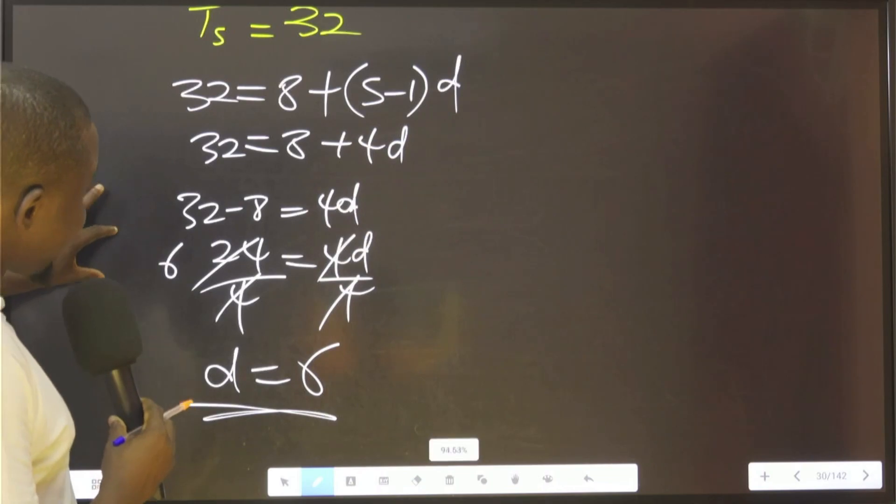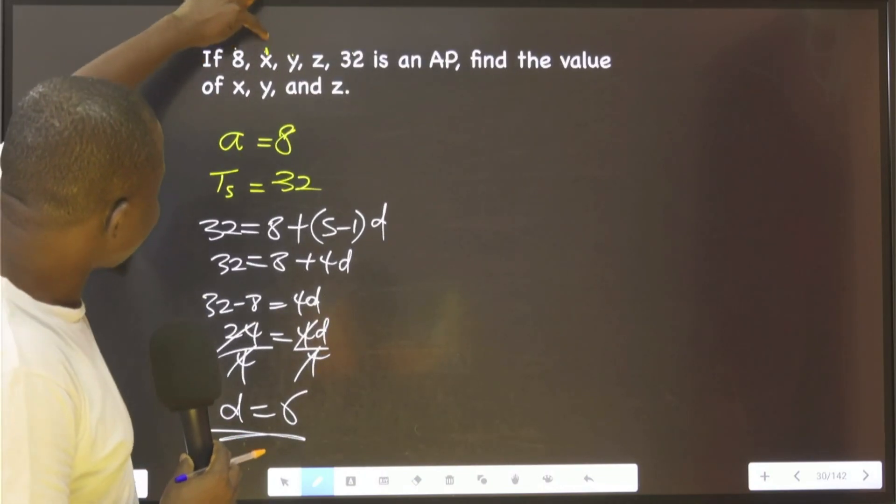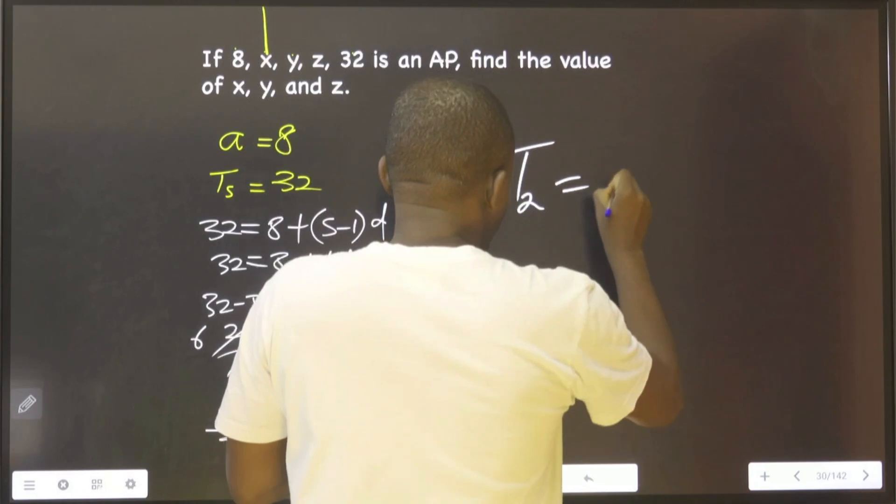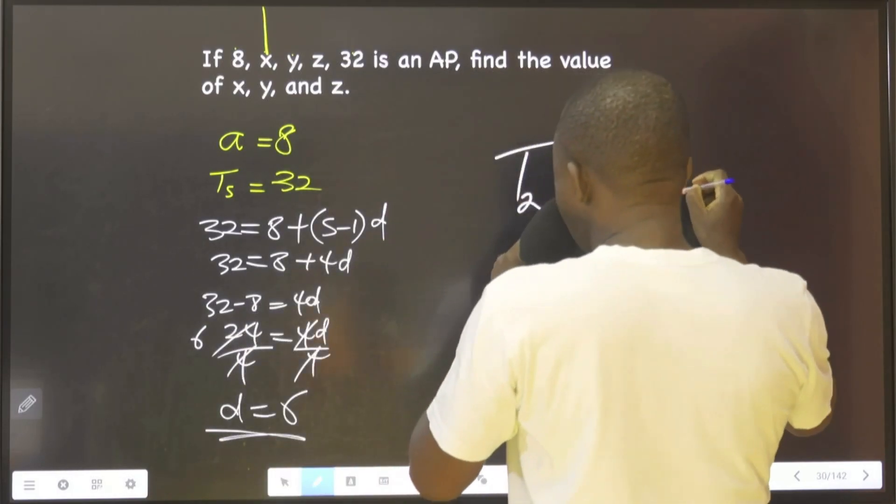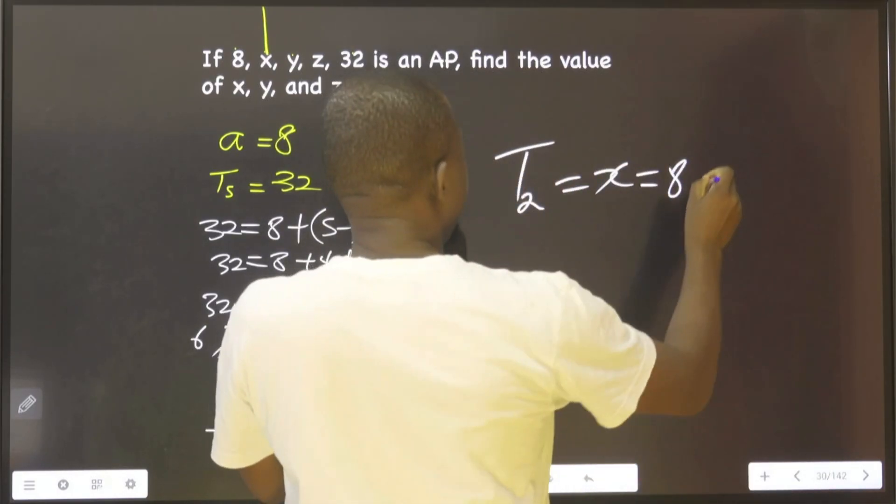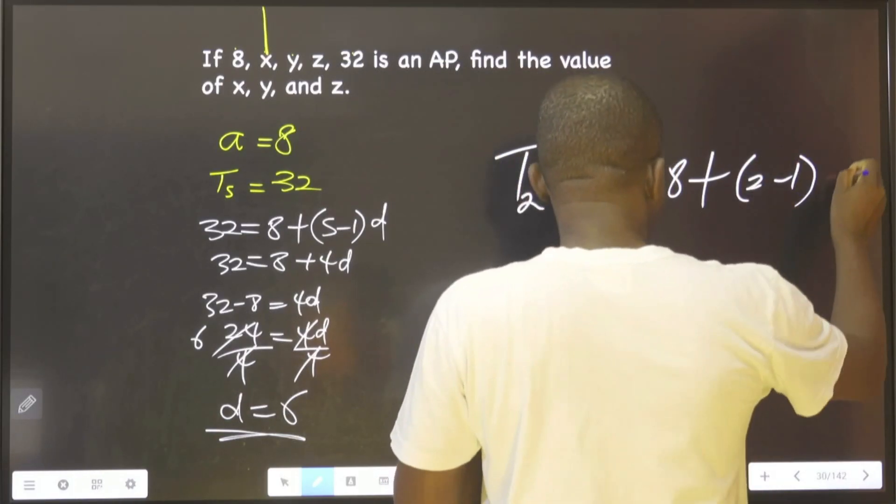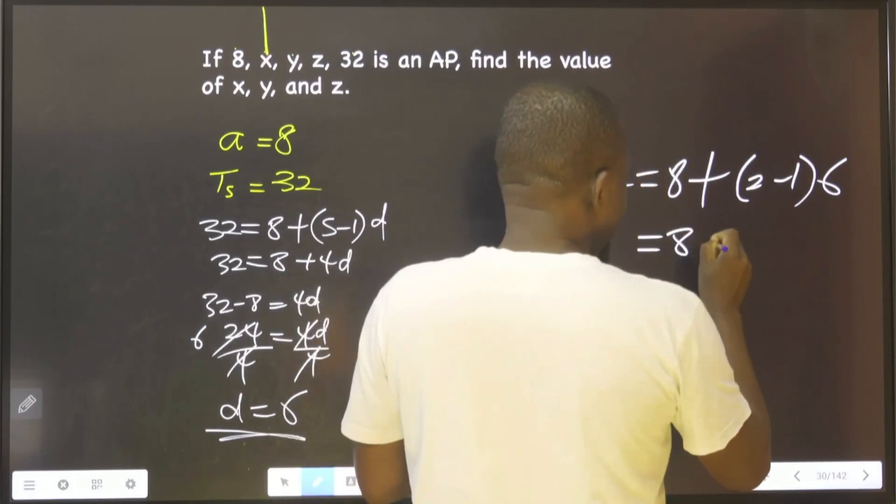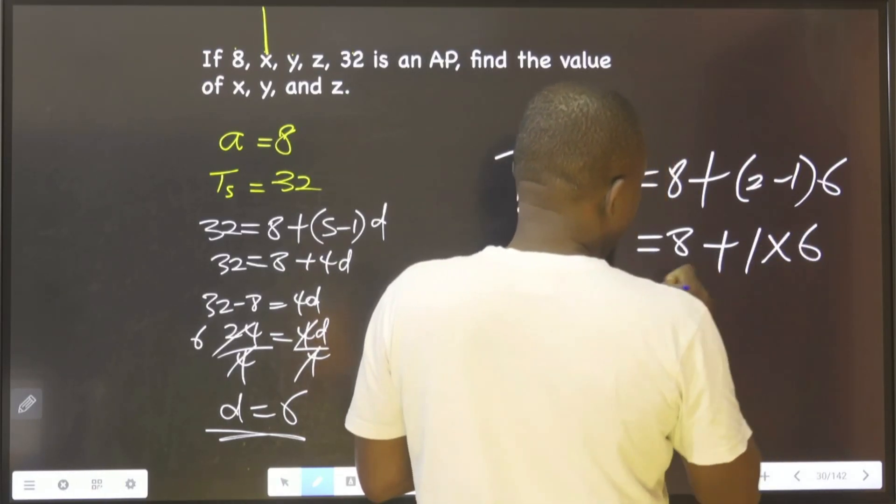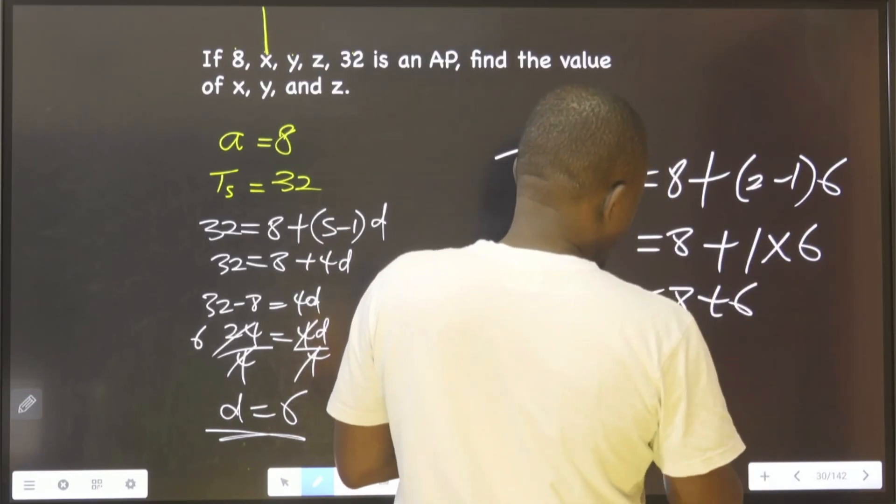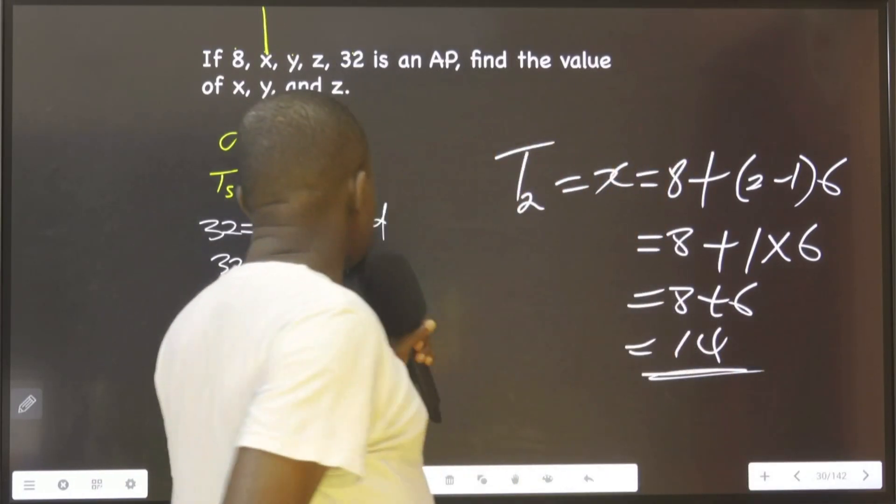Now that we have 6, we can find the second term. So the second term x is equal to a, which is 8, plus the second term minus 1, then we put the d, which is 6. This equals 8 plus 1 multiplied by 6, which is 8 plus 6, which is 14.